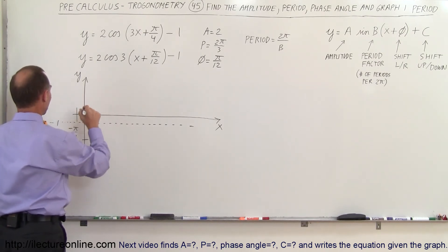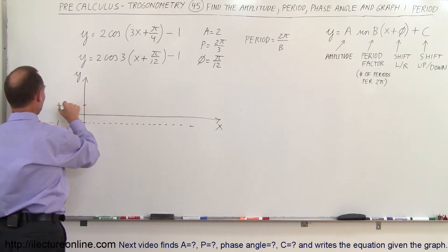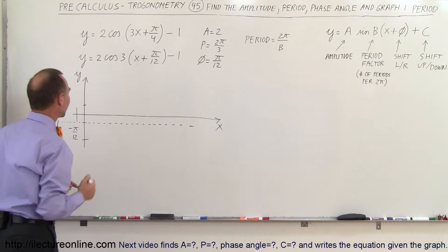And yes negative 5 over 12 thank you and over here it'll be plus 1. So it'll bounce back and forth between plus 1 and negative 3.